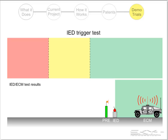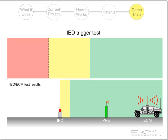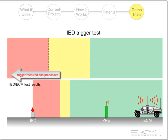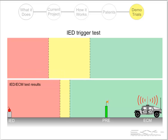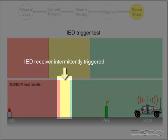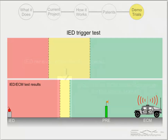The experiment proceeds by moving the IED receiver progressively farther from the ECM and repeating the test until we observe the trigger signal is received and processed — in other words, the IED receiver has moved from the safe region to the danger region, colored red. At some point in the test, the IED receiver will be placed at a range where it can be intermittently triggered. This indicates the ground truth ECM protection range.